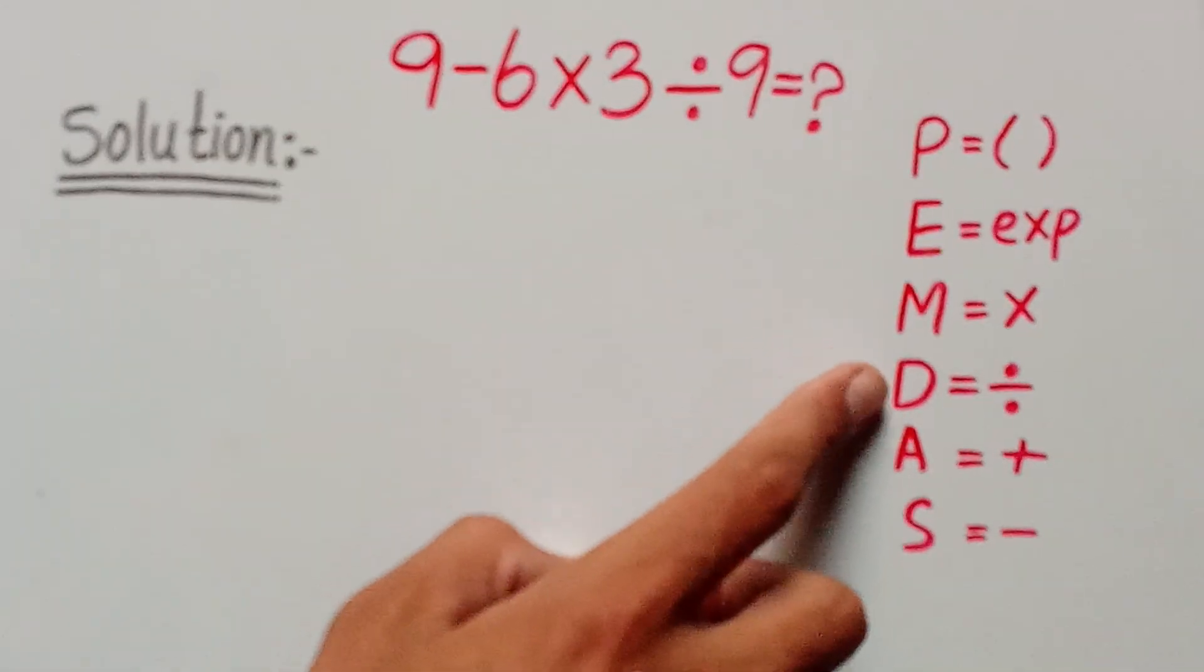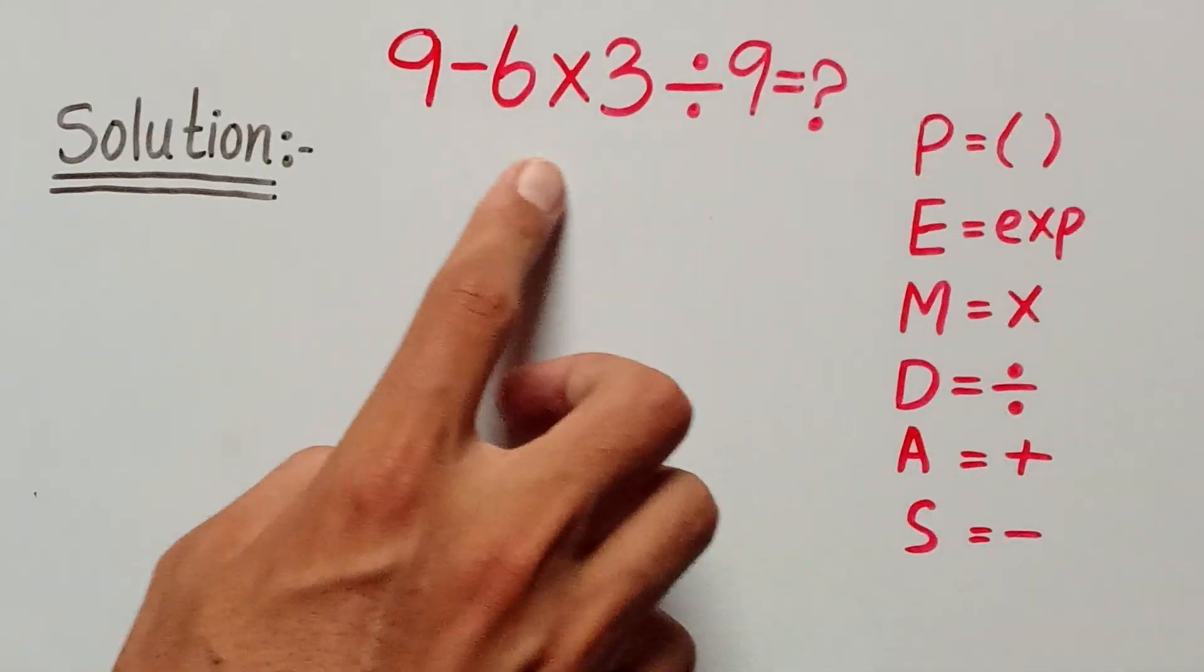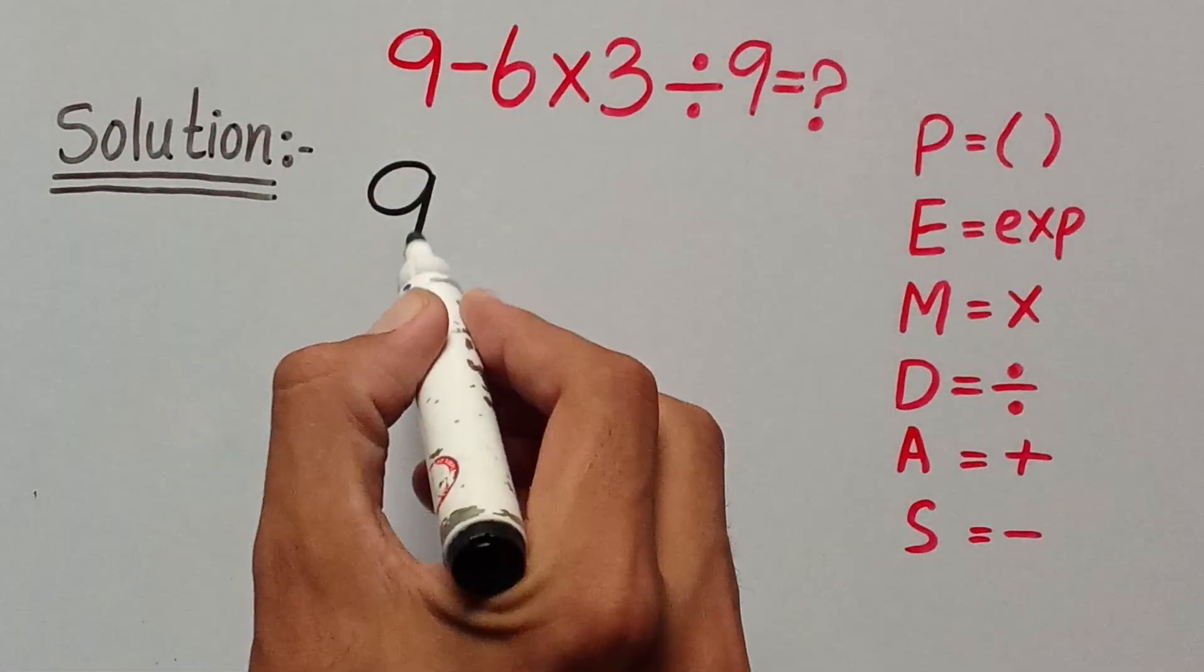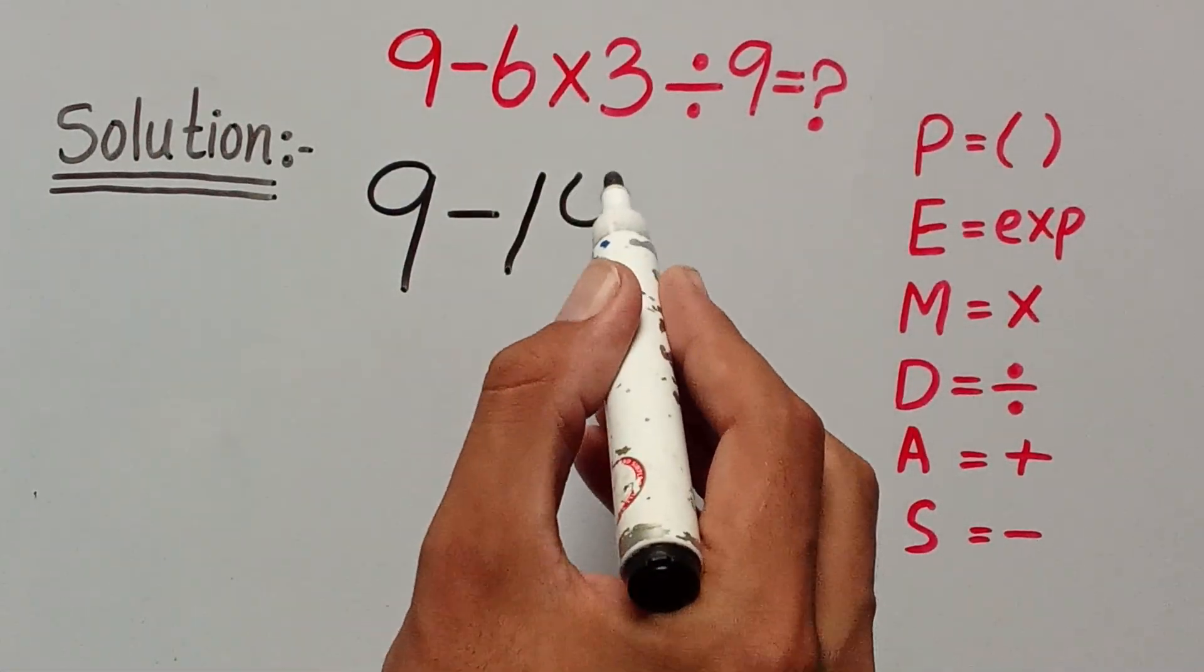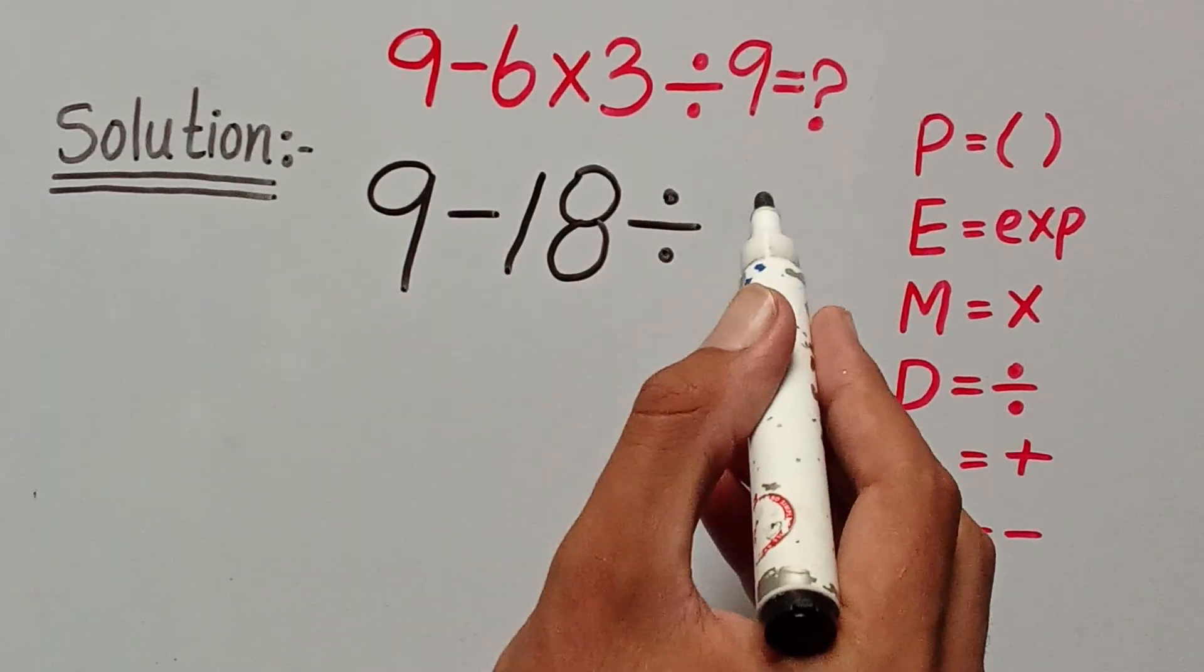Multiplication and division have equal priority, and we can solve it from left to right. So I can write this question as 9 minus 6 times 3 equals 18, divided by 9.